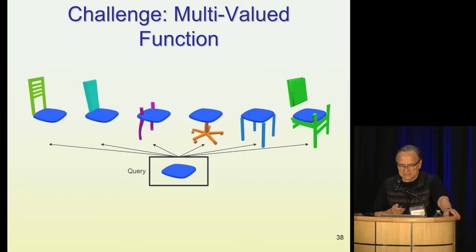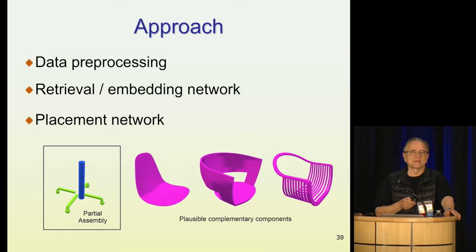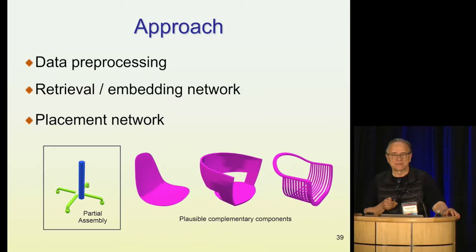The approach has a significant data processing part dealing with denoising noisy data. We then build networks that create an embedding space where the parts live, from which we try to select the appropriate parts that complement a given part. There is another network that actually does the placement of the parts.